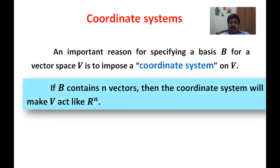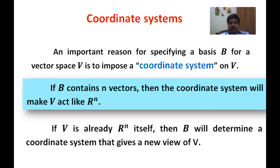If the basis B contains N vectors, the coordinate system will make V act like ℝⁿ — so all the properties in ℝⁿ can be used in these coordinates, and vectors behave like numbers, which will be very easy to transmit data. If V is already ℝⁿ itself, then B will determine a coordinate system that gives a new view of V.